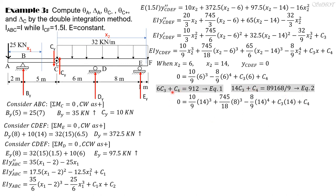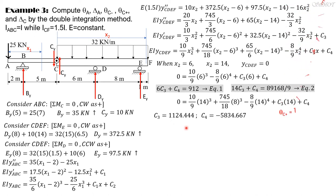Subtracting equation 1 from equation 2 eliminates C4, allowing us to solve for C3. We find C3 equals 1124.44 and C4 equals negative 5834.667. Therefore, since C3 is the slope just to the right of C and C4 is the deflection at C: the slope just to the right of C is 1124.44/EI, and the deflection at C is negative 5834.667/EI.